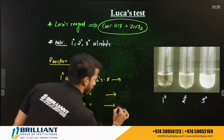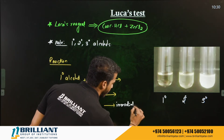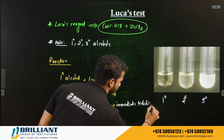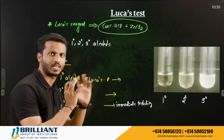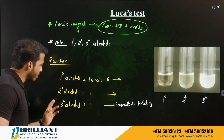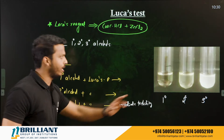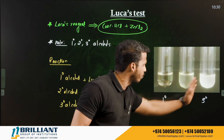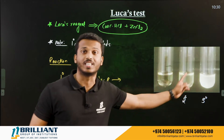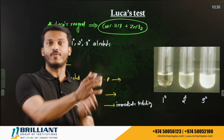Turbidity means cloudiness or a precipitate forming. Tertiary alcohol gives immediate turbidity when treated with Lucas reagent — you can clearly see that high cloudiness in the test tube, which confirms it is a tertiary alcohol.